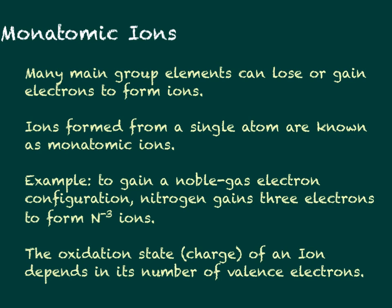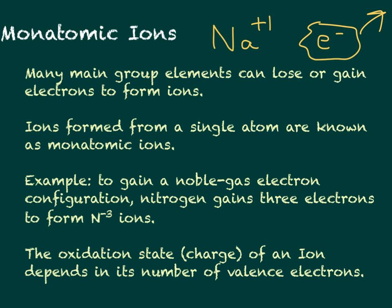For example, sodium from the periodic table forms a plus one ion, meaning its outer shell electron went away — it lost one electron, giving it a plus one charge. Nitrogen, on the other hand, gains three electrons to form a negative three charge, written as N with a minus three superscript. Atoms do this because they want to gain a noble gas electron configuration — eight electrons in their valence shell — by gaining or losing electrons.